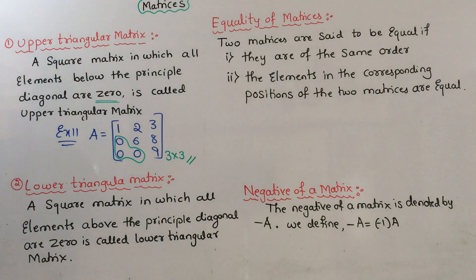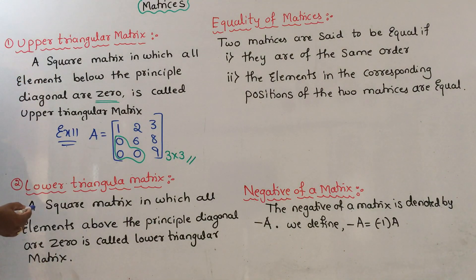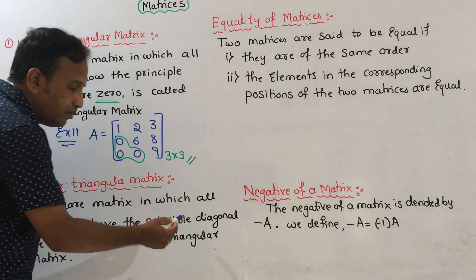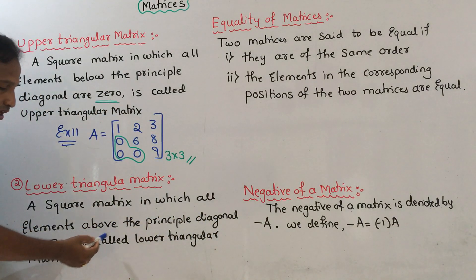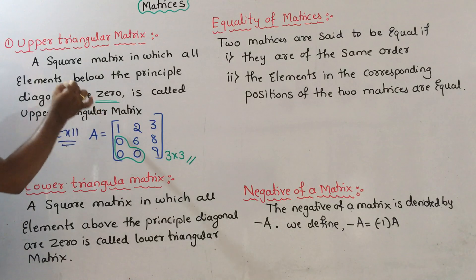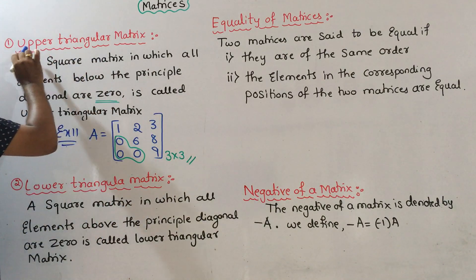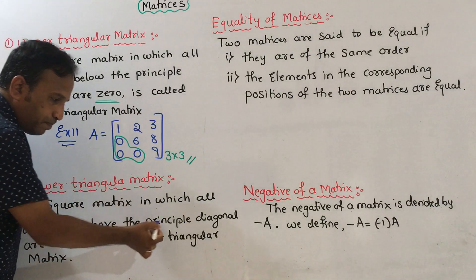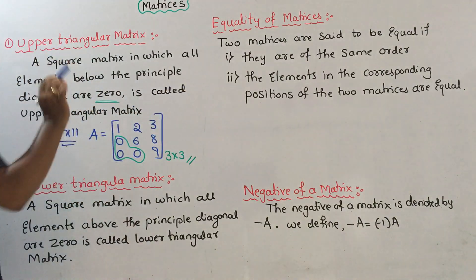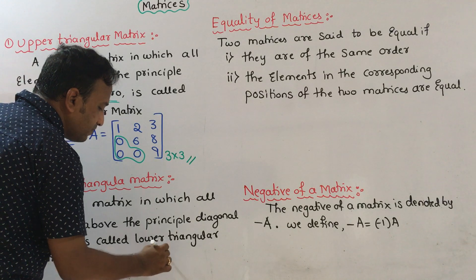Second definition: lower triangular matrix. A square matrix in which all elements above the principal diagonal are zero is called a lower triangular matrix. The key difference: upper triangular has zeros below the diagonal, lower triangular has zeros above the diagonal.